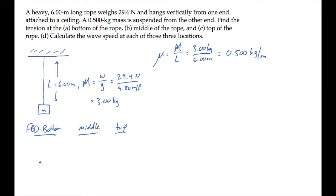At the bottom of the rope, there are two forces acting, the weight of the hanging mass and the tension acting in the upward direction.